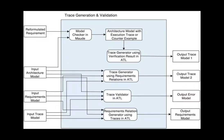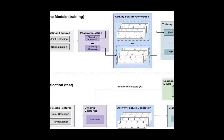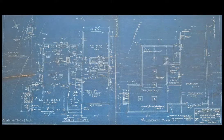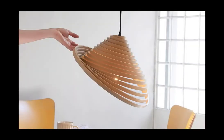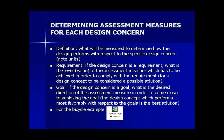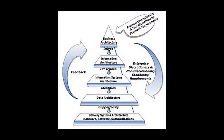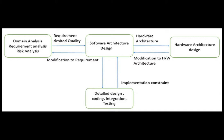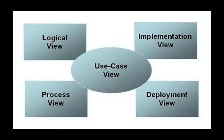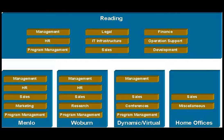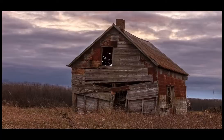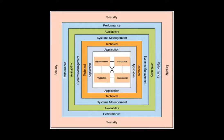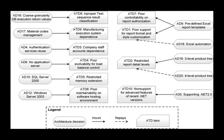Software Architecture Erosion. Software architecture erosion refers to the gap observed between the planned and actual architecture of a software system as realized in its implementation. These include process-oriented architecture conformance, architecture evolution management, architecture design enforcement, architecture to implementation linkage, self-adaptation, and architecture restoration techniques consisting of recovery, discovery, and reconciliation.